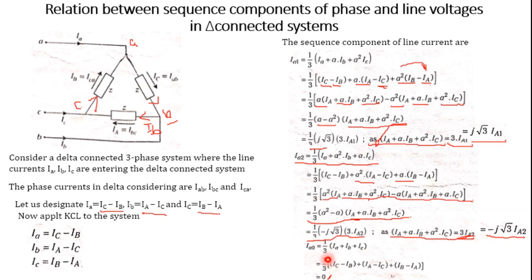However, the zero sequence of the line current being zero does not mean the zero sequence of the phase current capital Ia0 is also zero. If the line current zero sequence is zero, it means capital Ia0 is also zero only in that specific case.